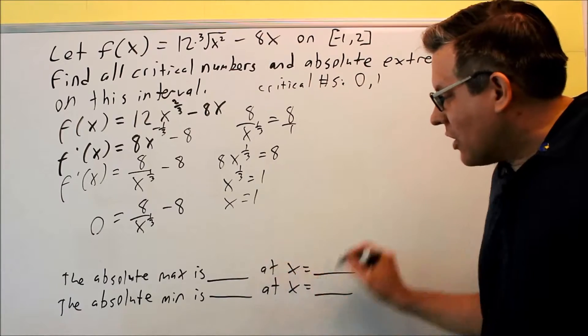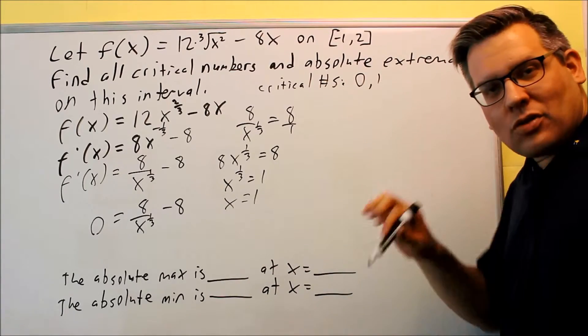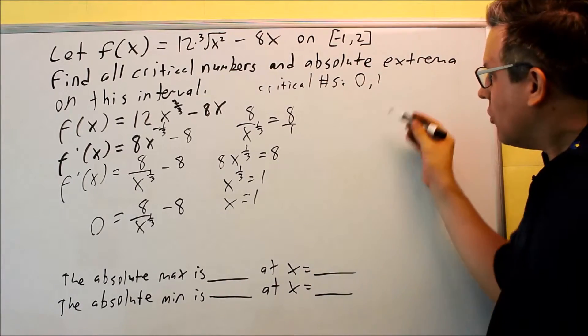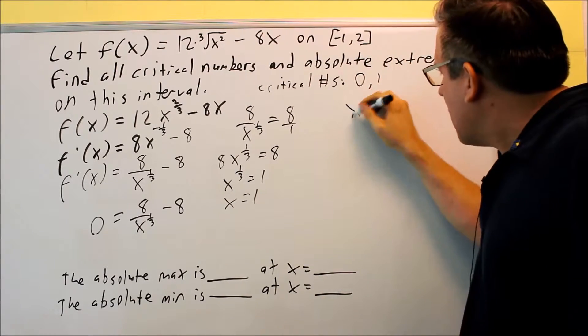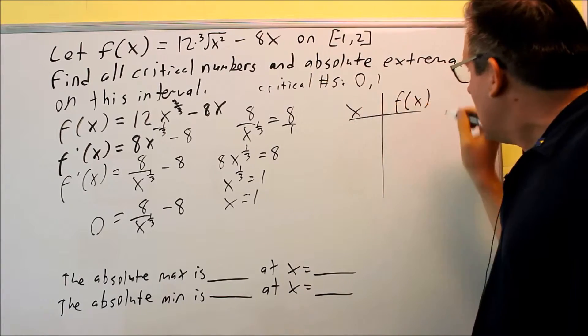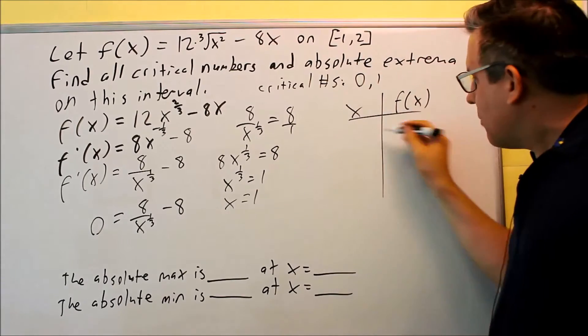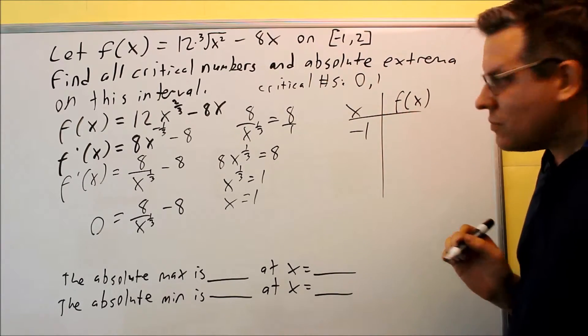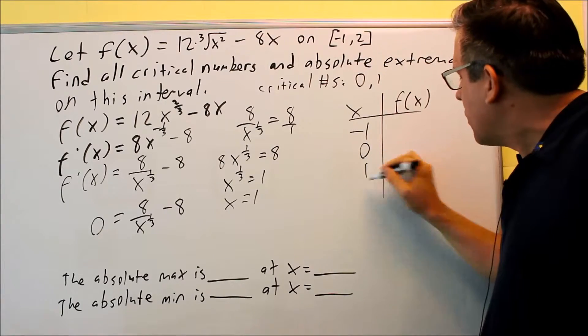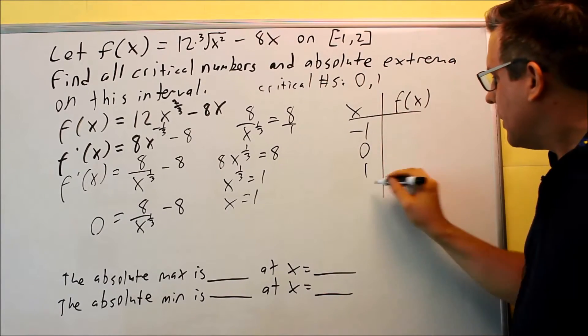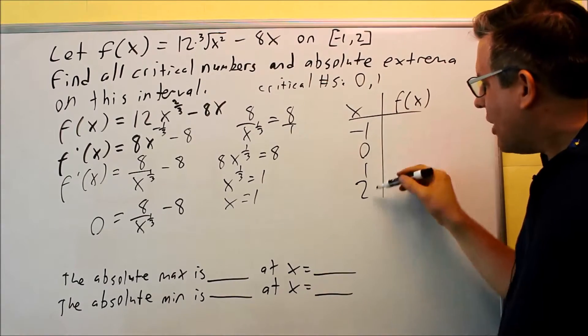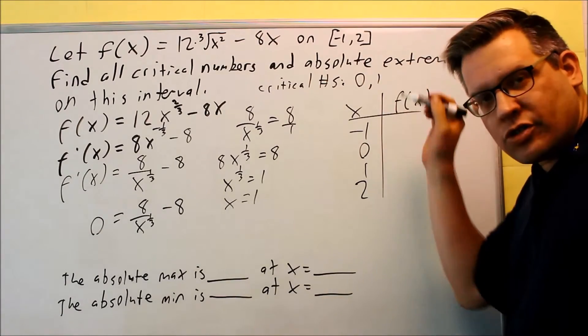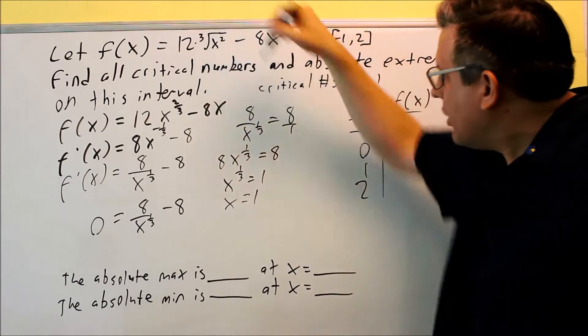To find this answer here, I have to put this information on a table. I've got to use my critical numbers and also my endpoints. So here's my x and f(x) table. I'll start with the left endpoint, negative 1. Then I'm going to put in my critical numbers, 0 and 1, and then also I'll put in 2. These I need to put into the original function.